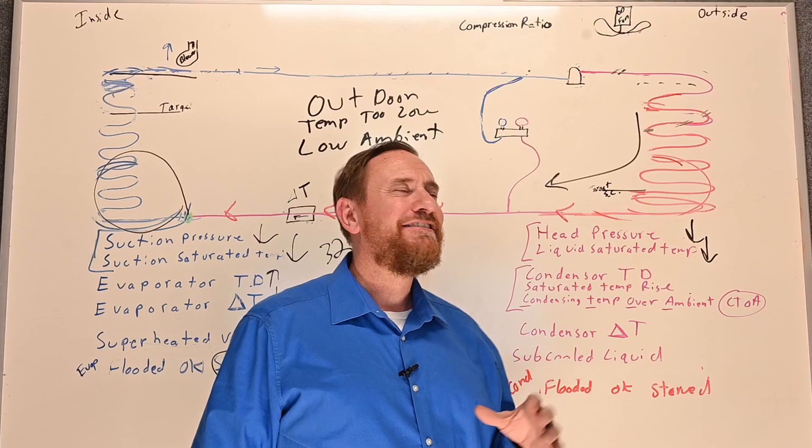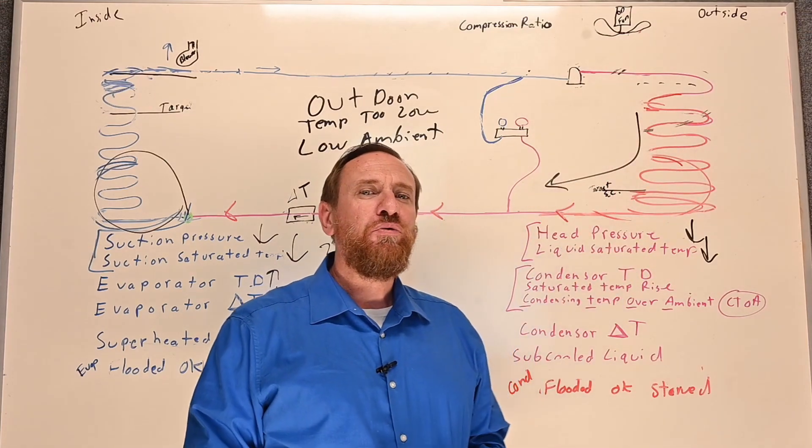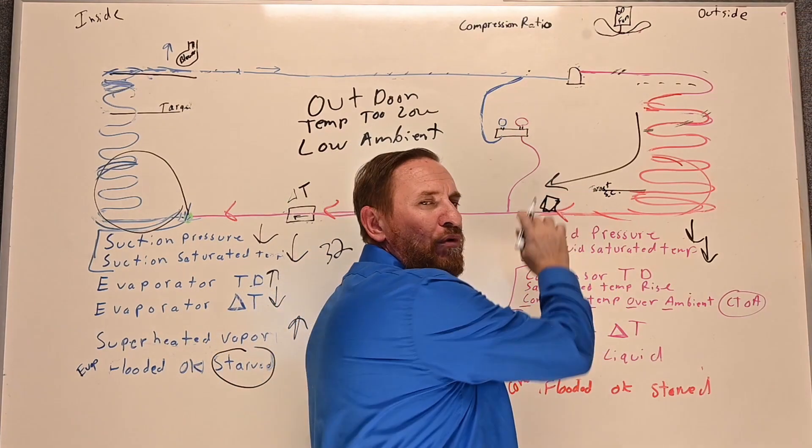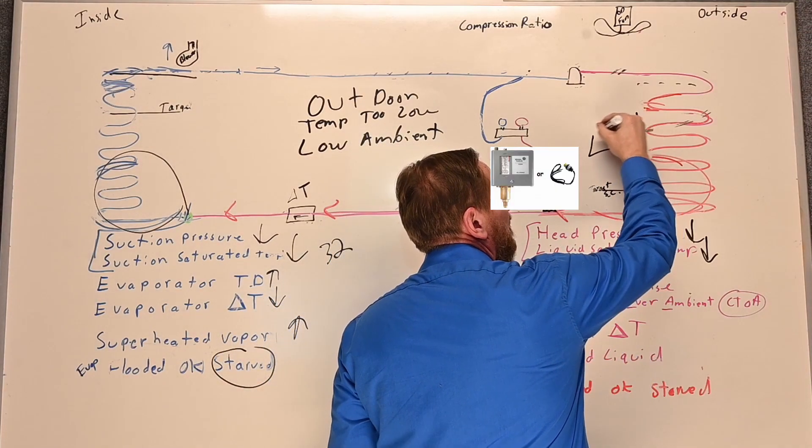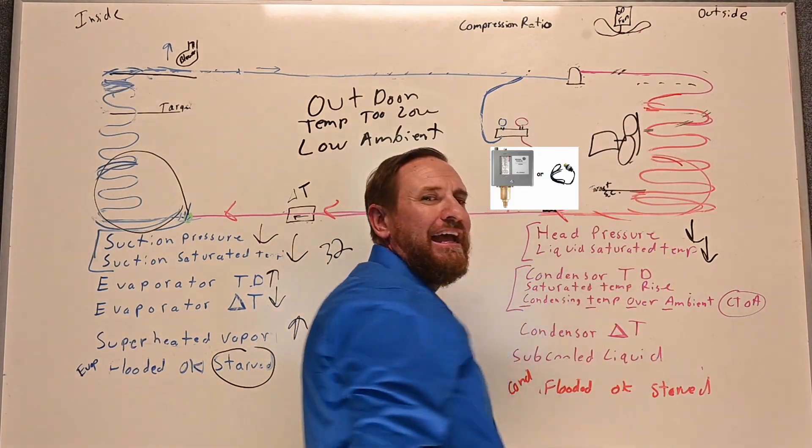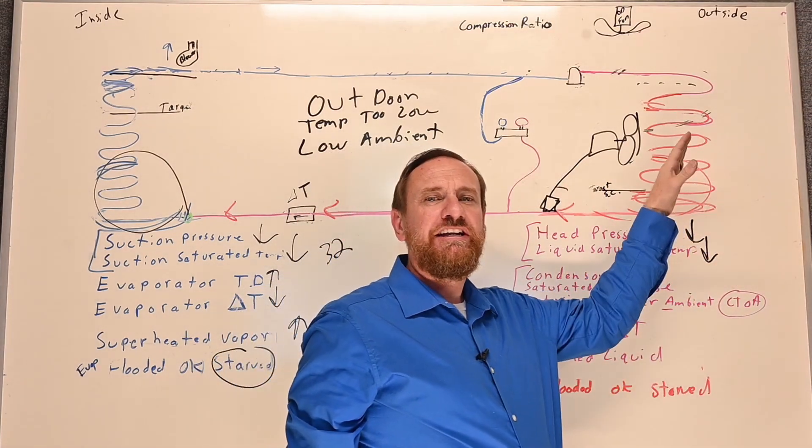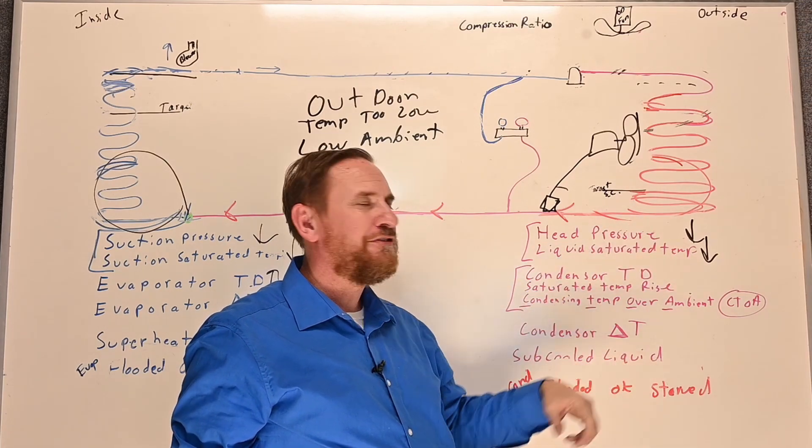So a low ambient kit simply means we need to increase the pressure. So I need to get more pressure right here. So one of the easy ways that we do is we put a pressure switch right here on the liquid side. And that pressure switch goes to our fan motor right here. And the pressure switch simply controls this fan motor. So as the temperature outside goes down, we know that our head pressure goes down and all this other stuff starts changing as well.